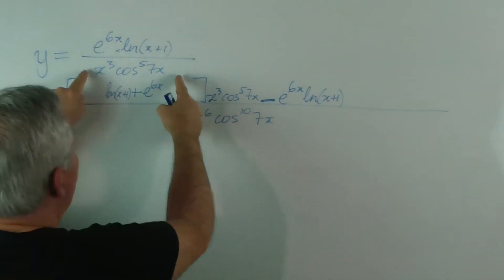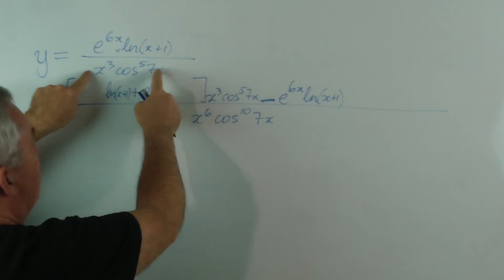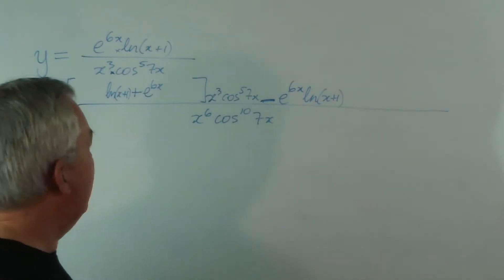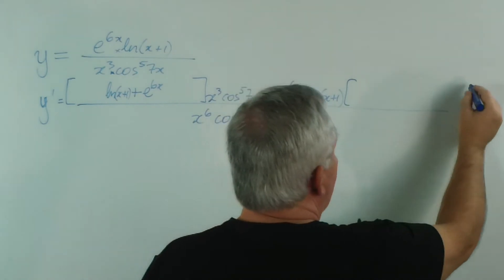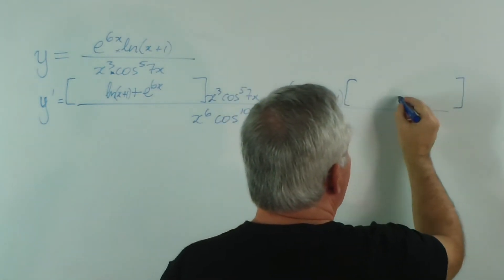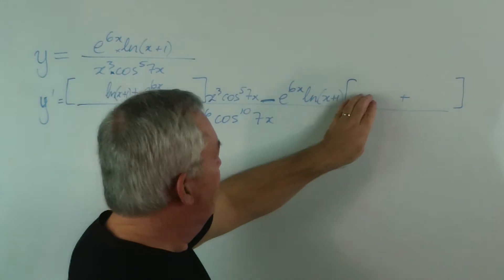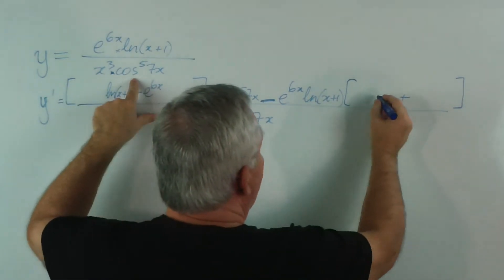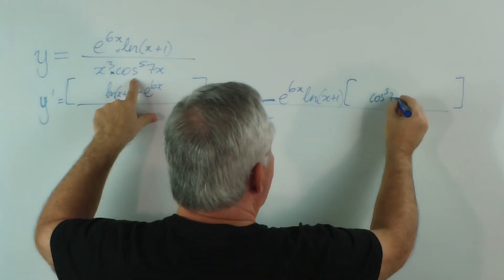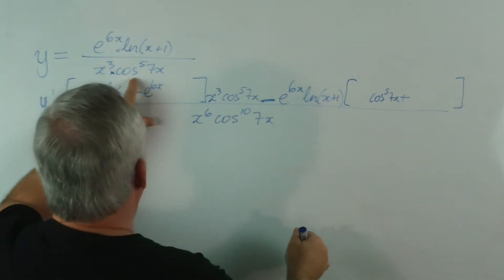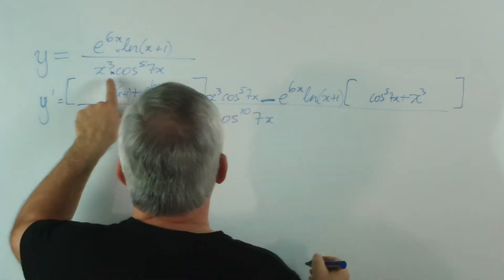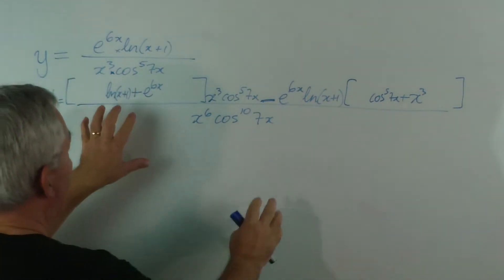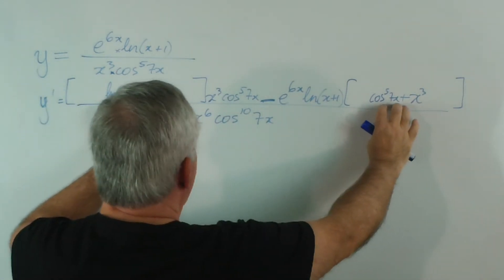Similarly, when I come to find the derivative of this denominator, it also is a product of x³ times cos⁵(7x). Consequently, its derivative is going to appear as a sum of two terms or two expressions in here. And I'm going to have a derivative of x³ times cos⁵(7x) plus x³ times the derivative of cos⁵(7x).